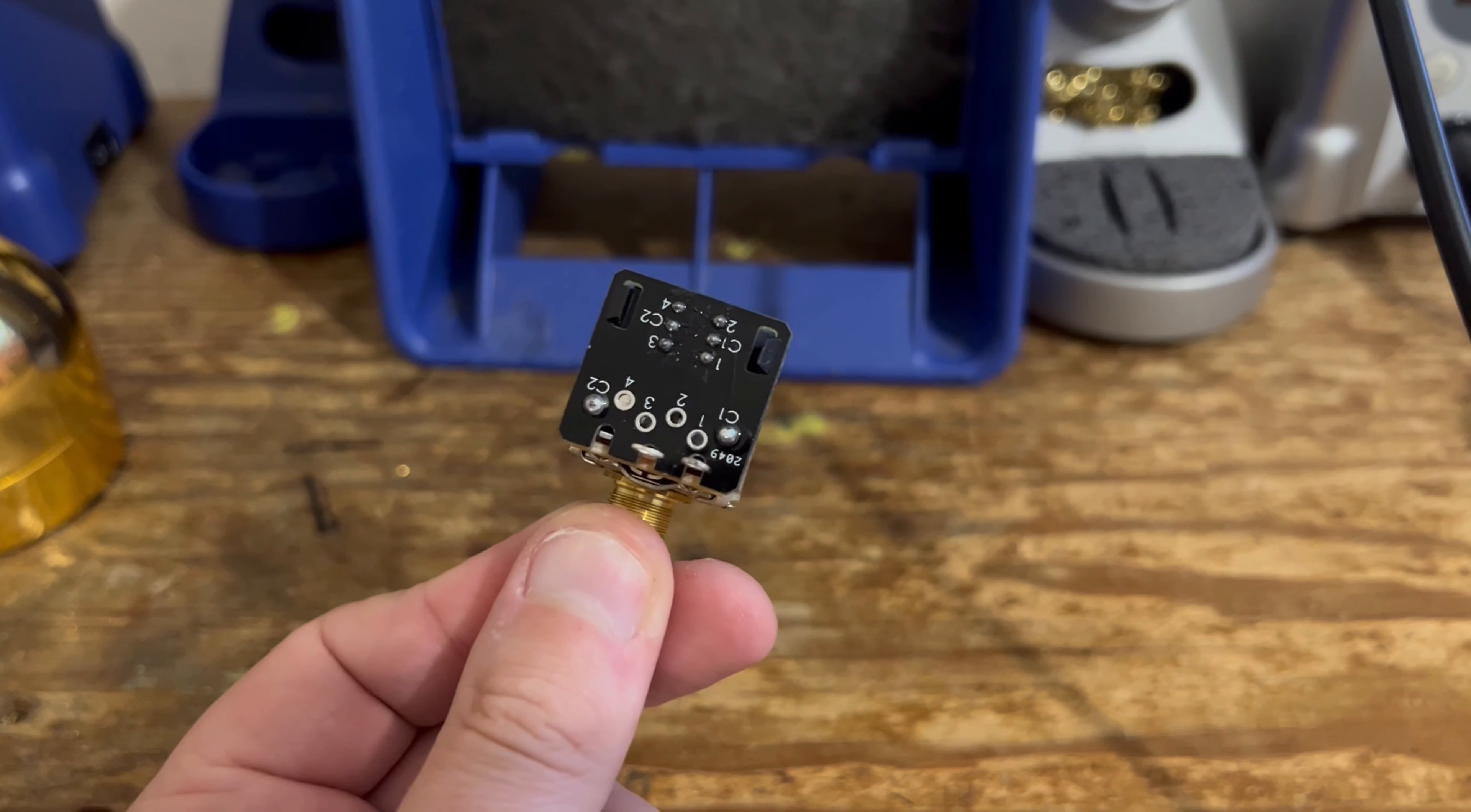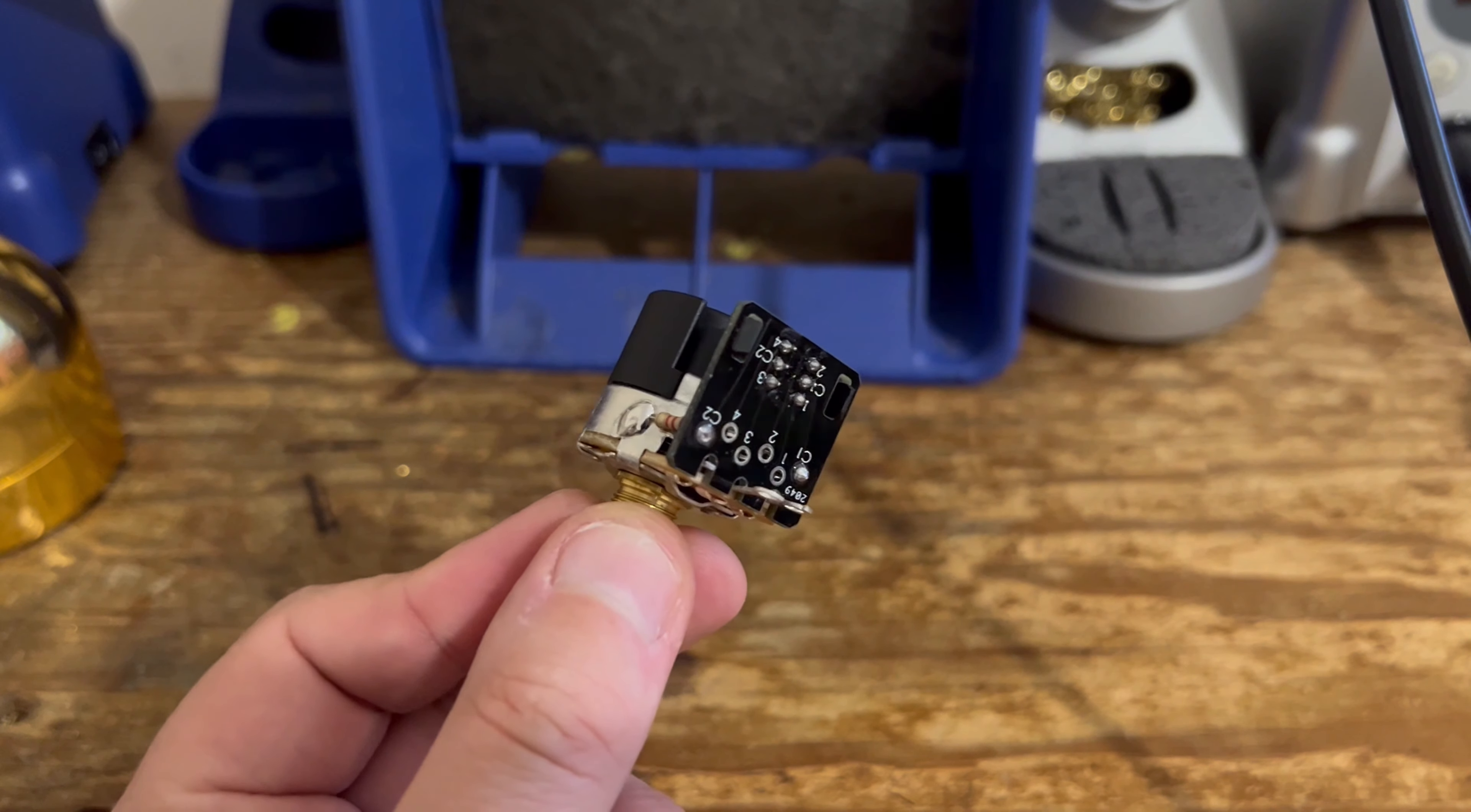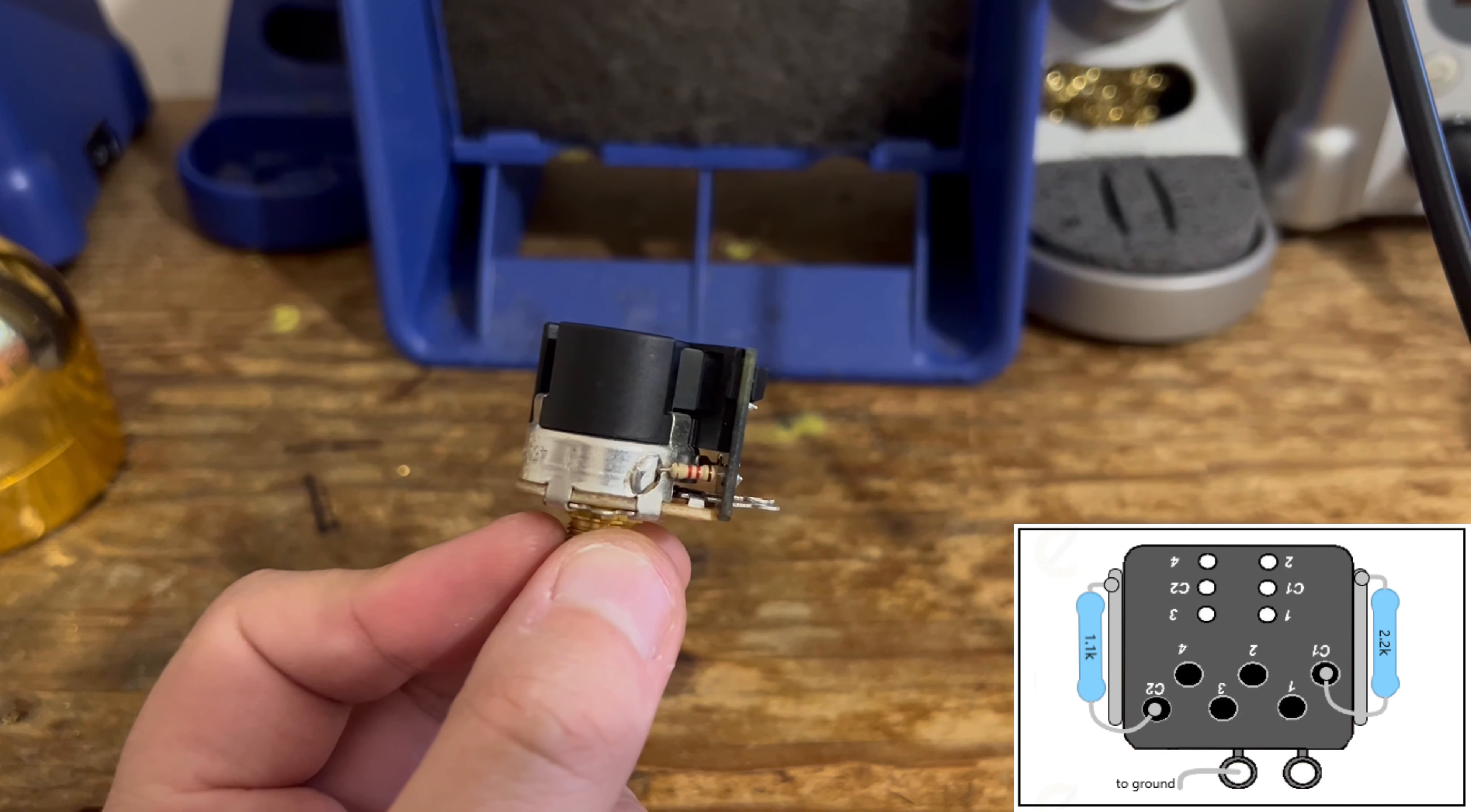So here's a close-up of the tone push-pull pots. I'm just going to give you a very quick overview of what has gone on here. So the PRS-style partial coil split uses two different resistors to send the signal to ground rather than a direct route to ground.